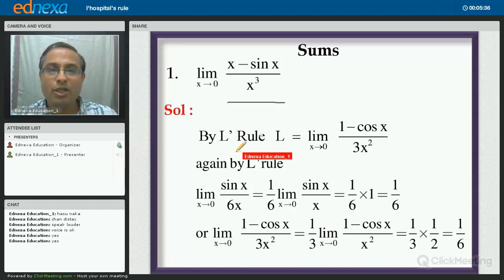So here, I have written in the solution by L'Hôpital's rule. What is L? It is limit of 1 minus cos x upon 3x² as x tends to 0. Why? As per the rule, find derivative of the numerator. What is derivative of x? 1. What is derivative of sin x? cos x. And find out derivative of the denominator, which is derivative of x³, that is 3x². Again, I repeat, L'Hôpital's rule can be used here because we get 0 by 0 form if we take the limit in the very first step. You can verify that, 0 minus sin 0, which is 0 upon 0.